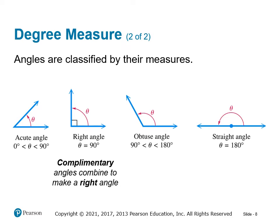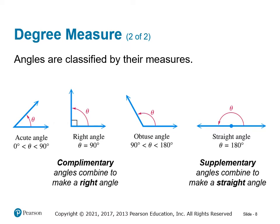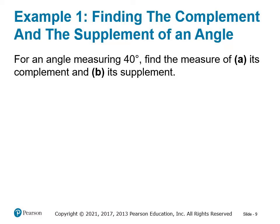Complementary angles combine to make a right angle. Complementary begins with CO like corner, so complementary angles add up to 90 degrees. Supplementary angles combine to make a straight angle — supplementary begins with S just like straight begins with S, so these angles combine to a degree measure of 180 degrees.